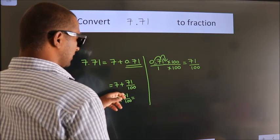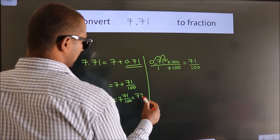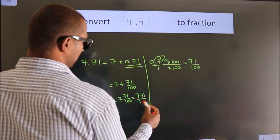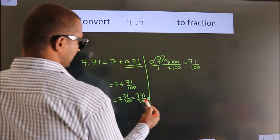In mixed form, 7 times 100 plus 71. 771 over 100 is our fraction.